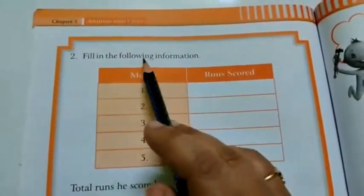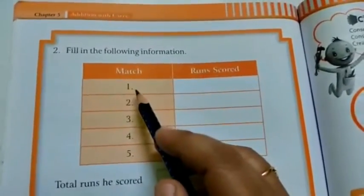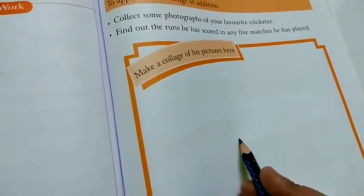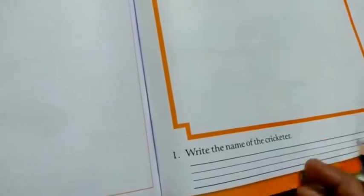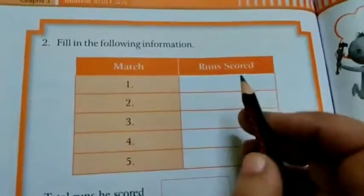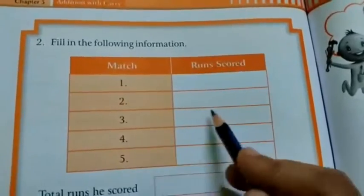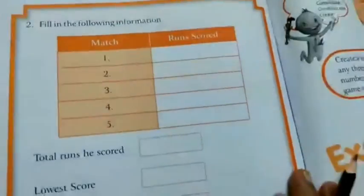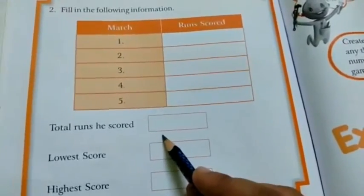Now question number 2. Fill in the following information. Match 1. What is he telling here? Find out the runs he has scored. So you have to just stick the photo and you have to write the name of that cricketer. And then here you have to write the runs. First match, how many runs were scored? Second, third, fourth and fifth. Then total runs.